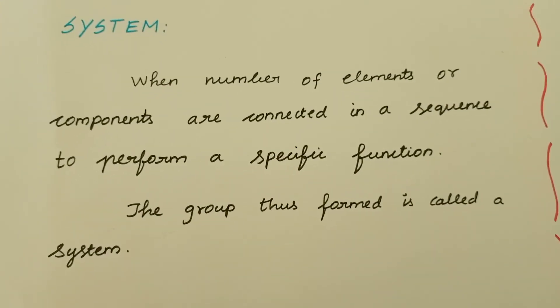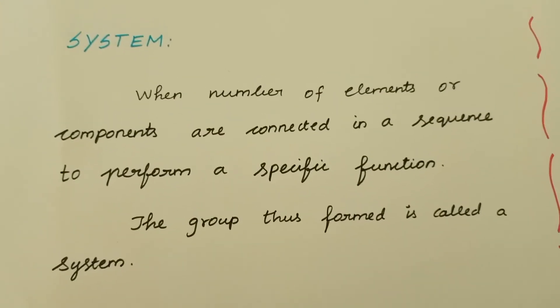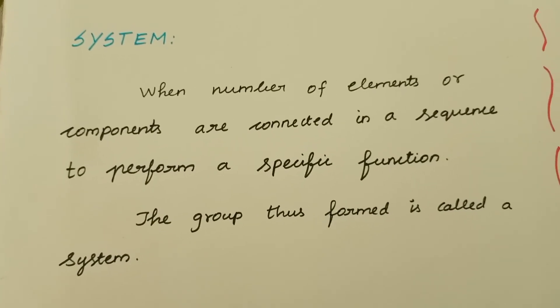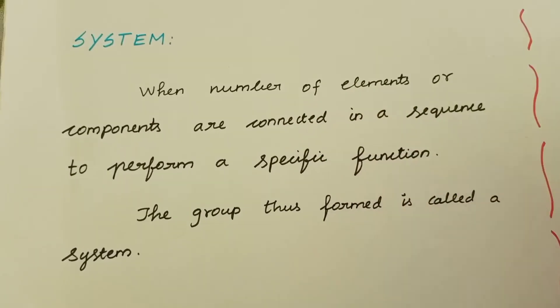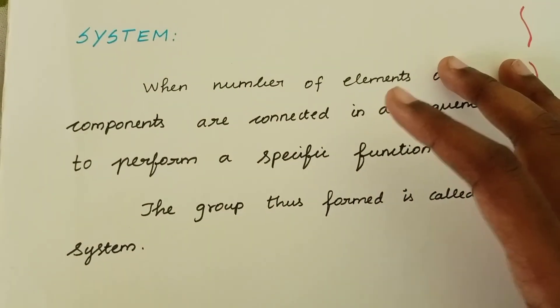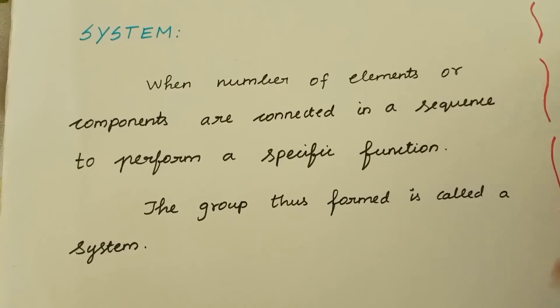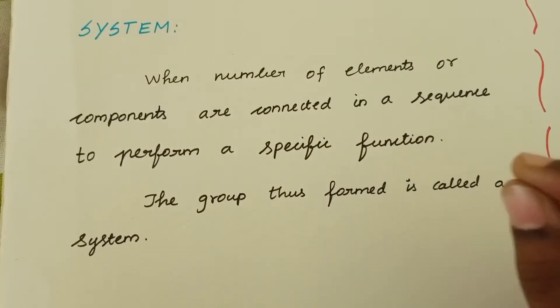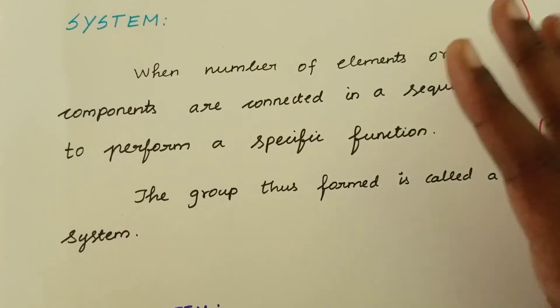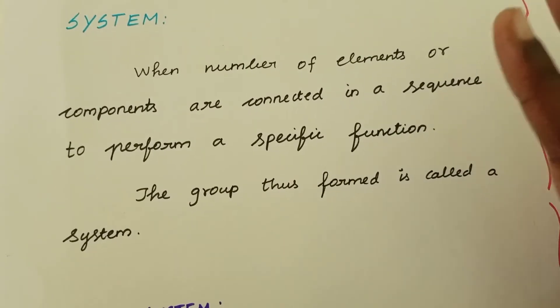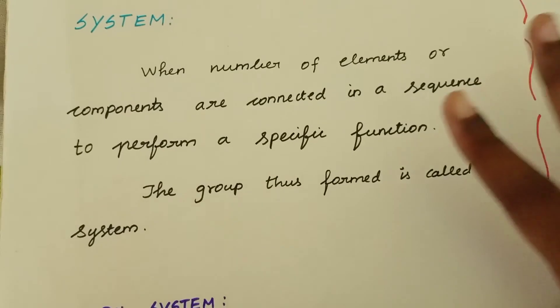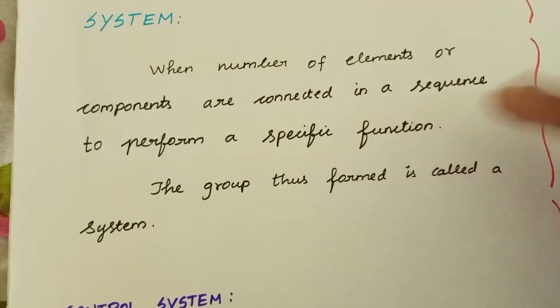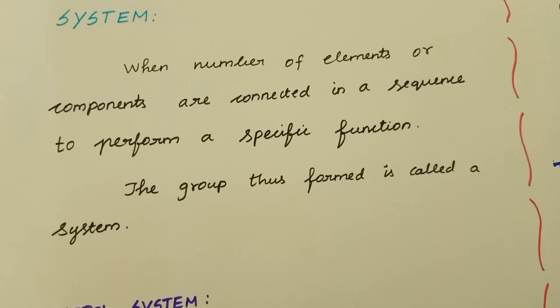Let me explain this more simply. When you have a number of elements or components in a group that are connected to perform a specific function, that group is called a system.